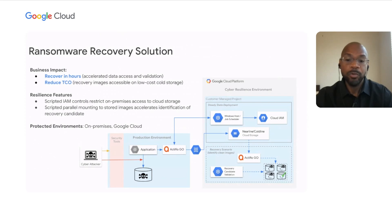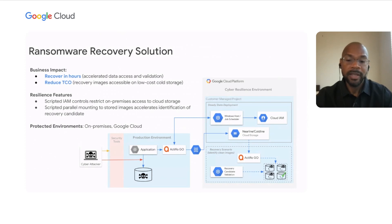It's also worth noting that to augment Actifio's native capabilities, the solution also provides guidance, best practices, and scripting templates crafted specifically to support the ransomware recovery use case. For example, scripted identity access management controls can provide an additional layer of protection by authorizing and deauthorizing access to the cloud storage in alignment with the scheduled backup window. Crucially, Actifio supports parallel direct access to multiple point-in-time data states without requiring transformation or movement of the data, allowing your security team to scan and rapidly identify uninfected recovery candidates, supporting recoveries in hours, not days.